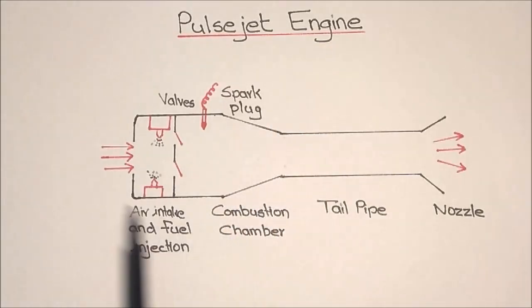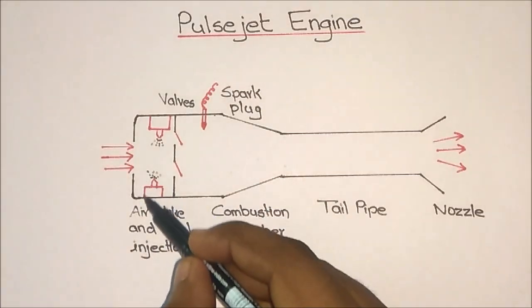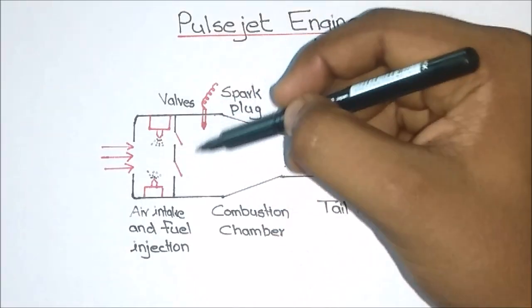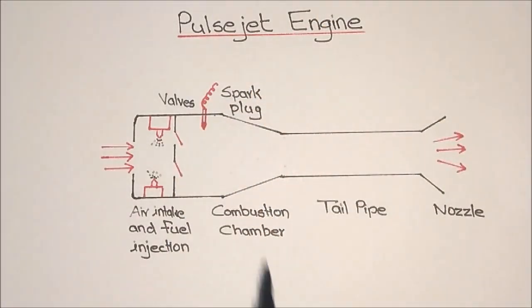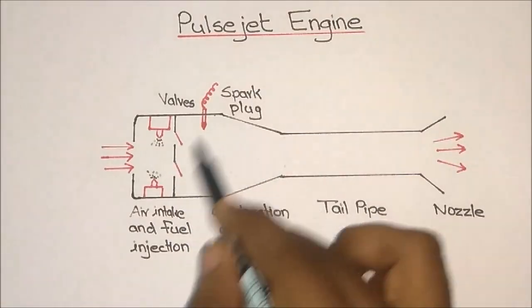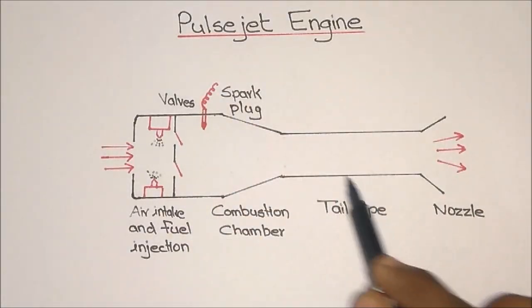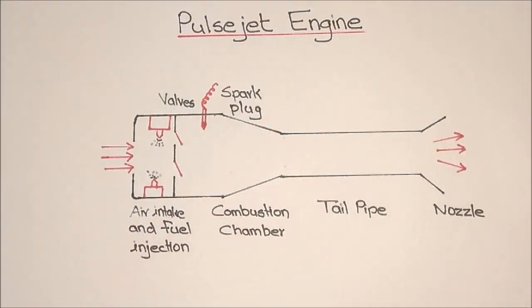As I represented in the figure, the major components of the pulsejet engine are an inlet and a fuel injector. There is also a spring-loaded valve, a spark plug, a combustion chamber, and a tail pipe with a nozzle. These are the major components of the pulsejet engine.